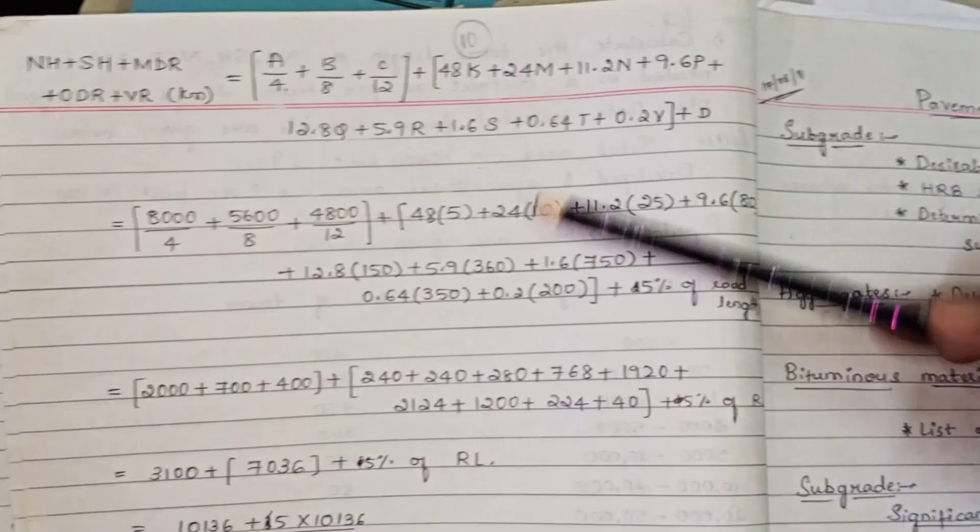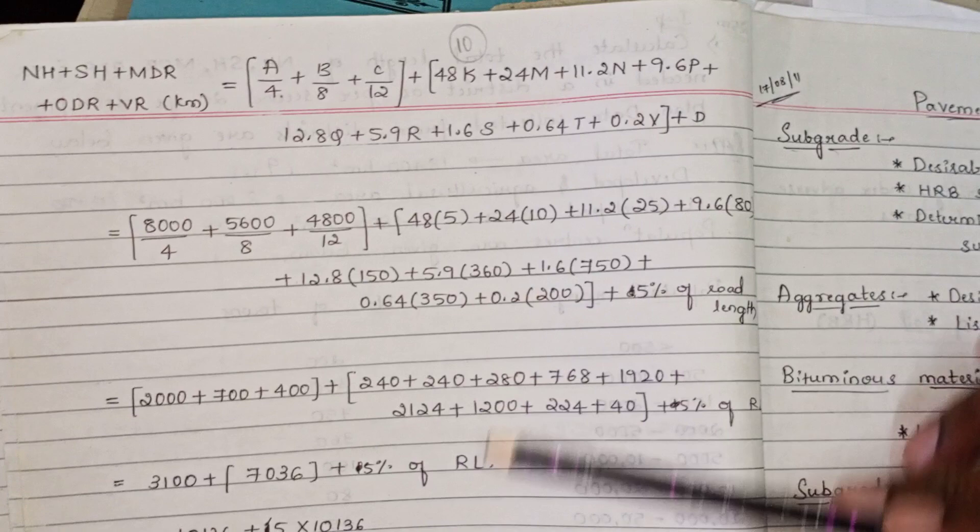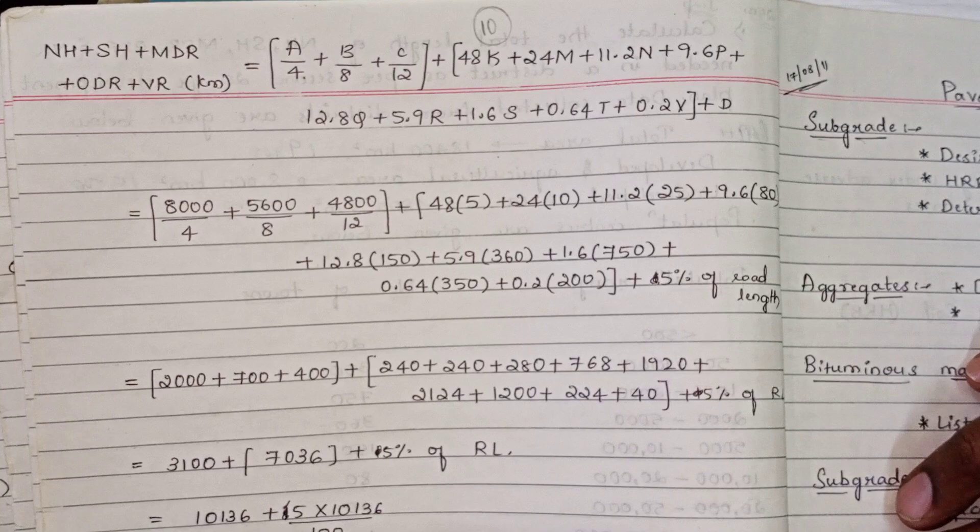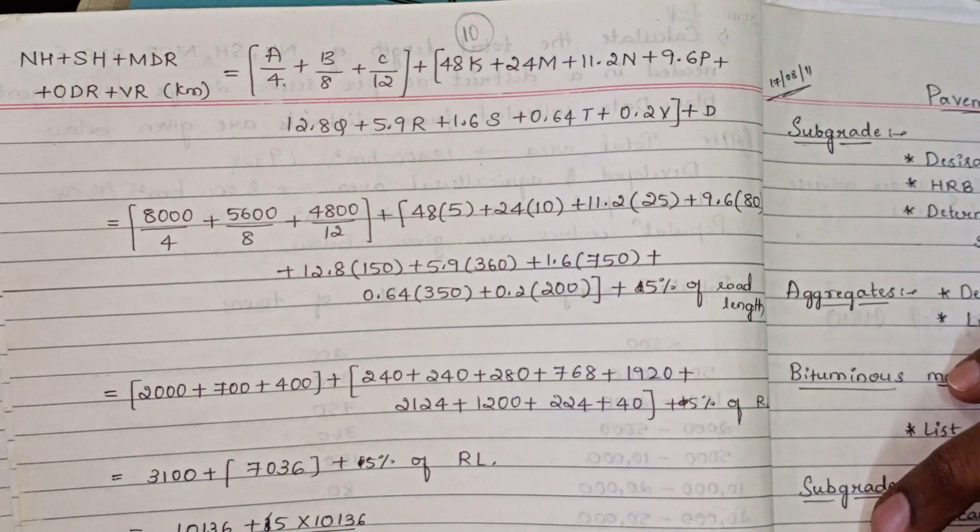This completes Model 1. In Model 1, we have seen the principles of transportation engineering and highway development and planning. KSHIP and KRDCL will be explained at the end.